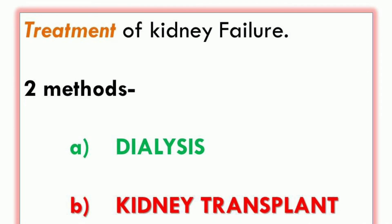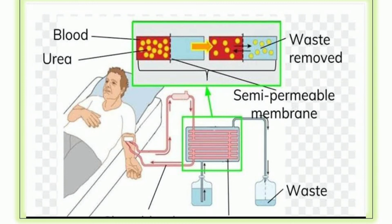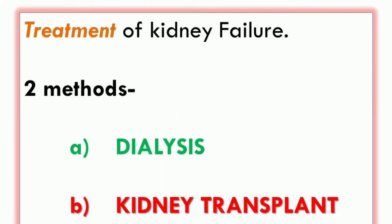اب ہم پڑھیں گے kidney failure کا treatment — اس کا علاج کس طرح ممکن ہے۔ دو methods ہیں: number one dialysis، and second one kidney transplant۔ Dialysis کہتے ہیں artificial cleaning of blood — خون کی مصنوعی طریقے سے صفائی۔ Kidney transplant میں گردوں کا مکمل تبادلہ ہوتا ہے — damaged kidney کو healthy kidney کے ساتھ replace کر دیا جاتا ہے۔